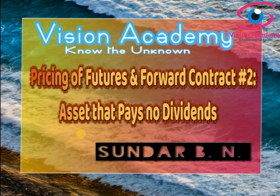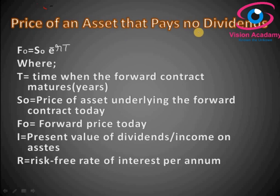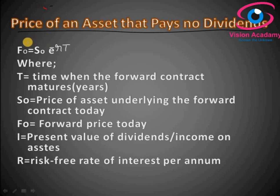Such type of evaluation will be made under this session. The formula we use to calculate the Price of an Asset that Pays No Dividend is F0 — that is the futures/forward price today, calculated for a forward contract. S0 is the Price of the Underlying Asset — the contracted price of the underlying asset at the time of the contract.